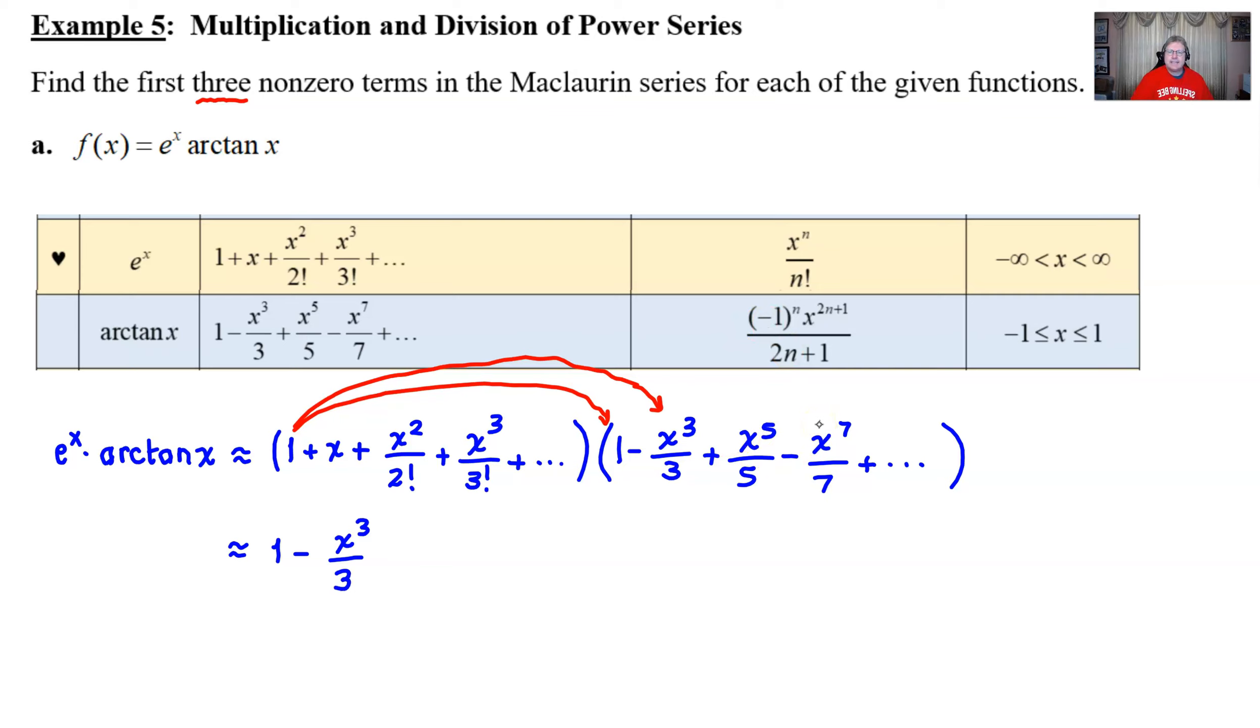But by the time you continue to multiply one by the x to the fifth and the x to the seventh, it's very likely that you're going to be getting terms that have powers that are probably higher than what would exist in the first three non-zero terms. If that turns out to be a lie, then we can always go back and work some more.